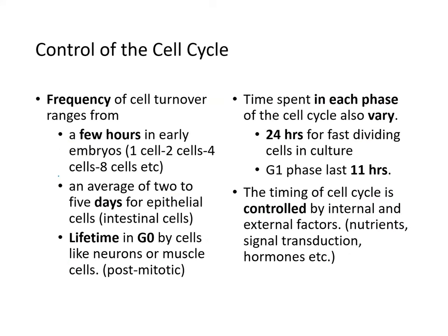How do we control the cell cycle? The frequency of cell turnover ranges from a few hours in early embryos — going from 1 to 2 to 4 to 8 cells — to an average of 2 to 5 days for epithelial cells like intestinal cells. For a lifetime, cells like those in the brain and muscle remain in G0. The timing of cell cycle is also controlled by internal and external factors.